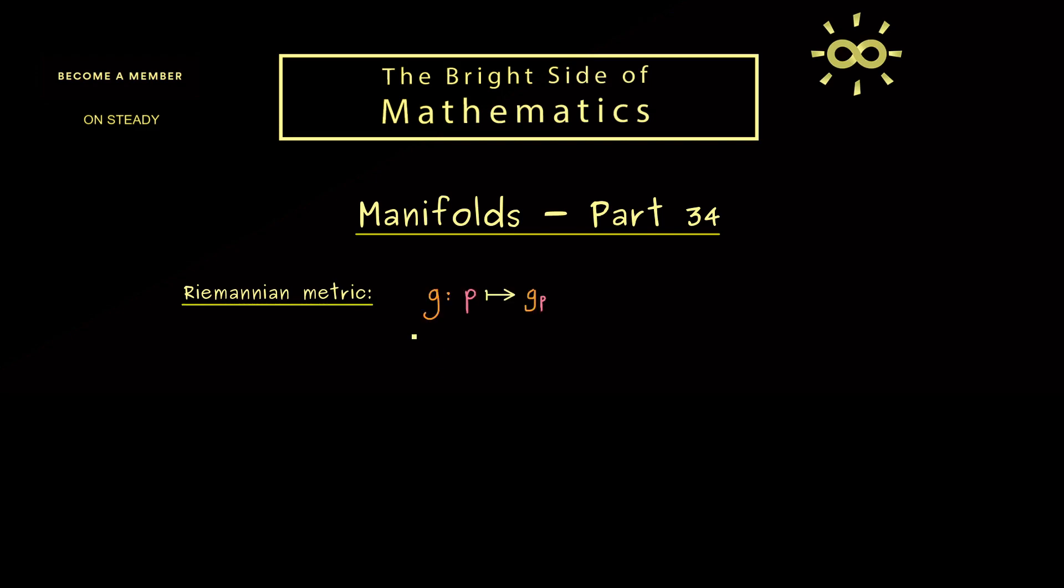And we have learned, it's not so complicated at all, because it's just a map g that sends every point p from the manifold to an inner product. In fact, g_p should be an inner product defined on the tangent space. And then the only thing we have to ask for this map is that it is a smooth map.